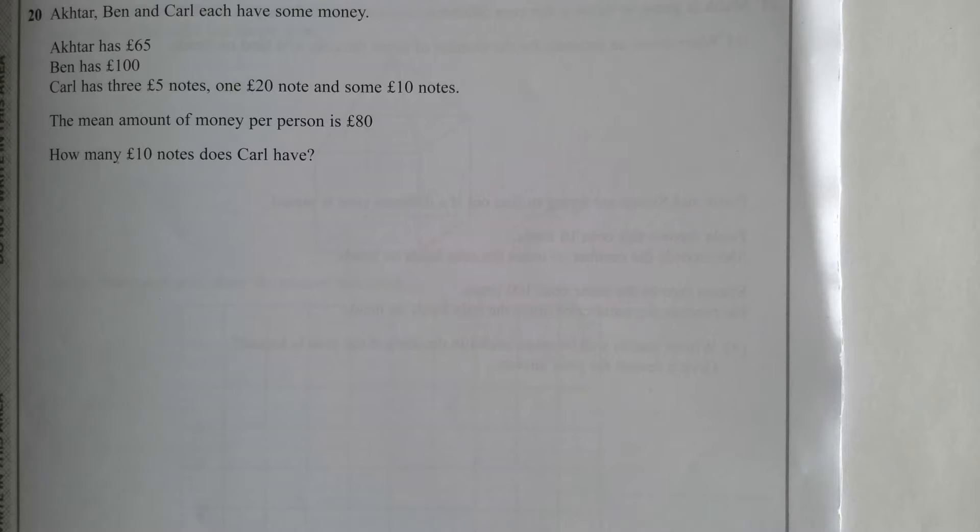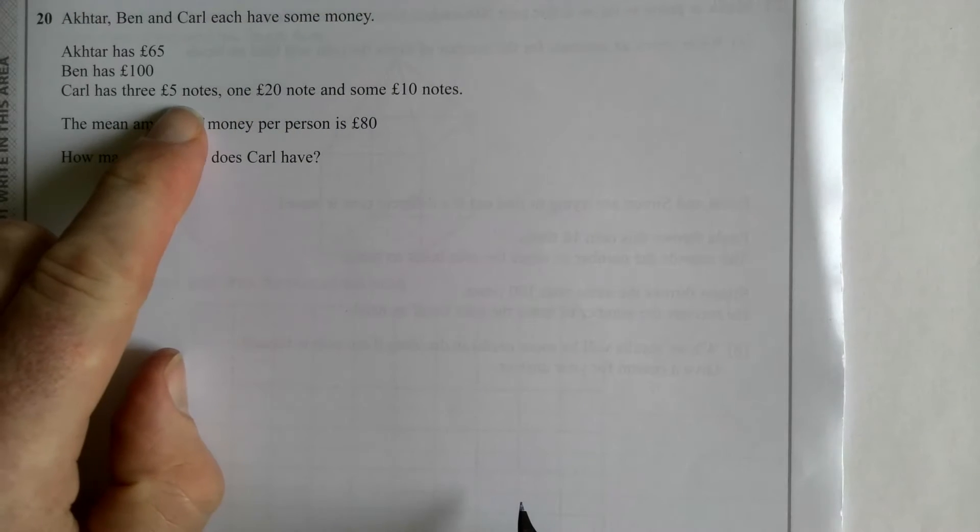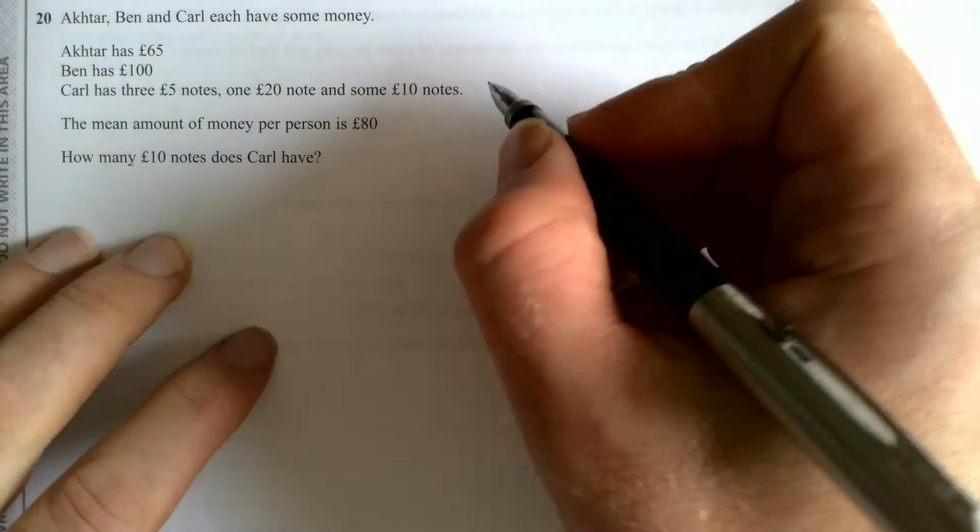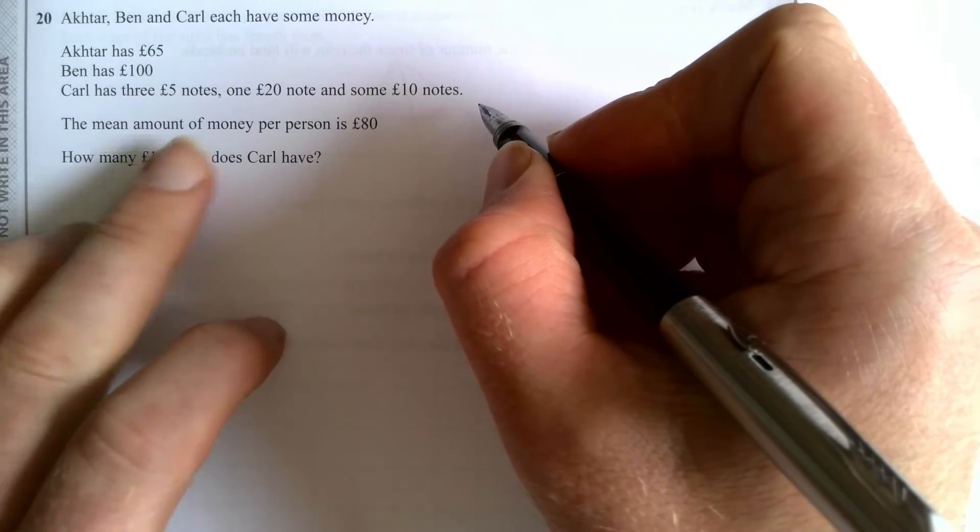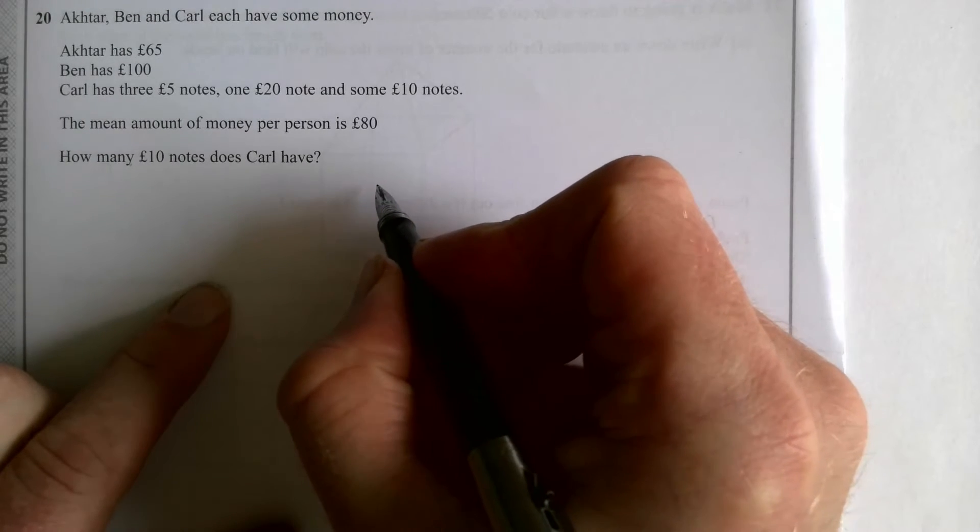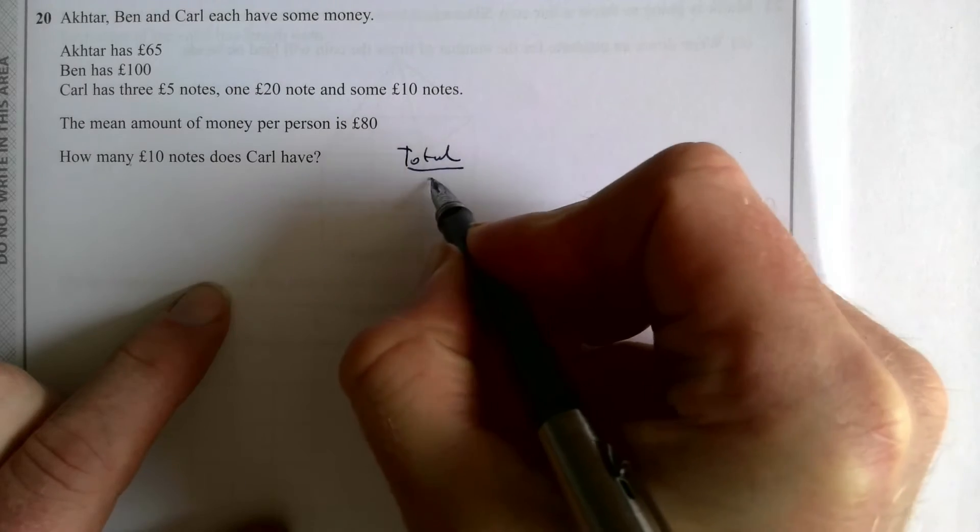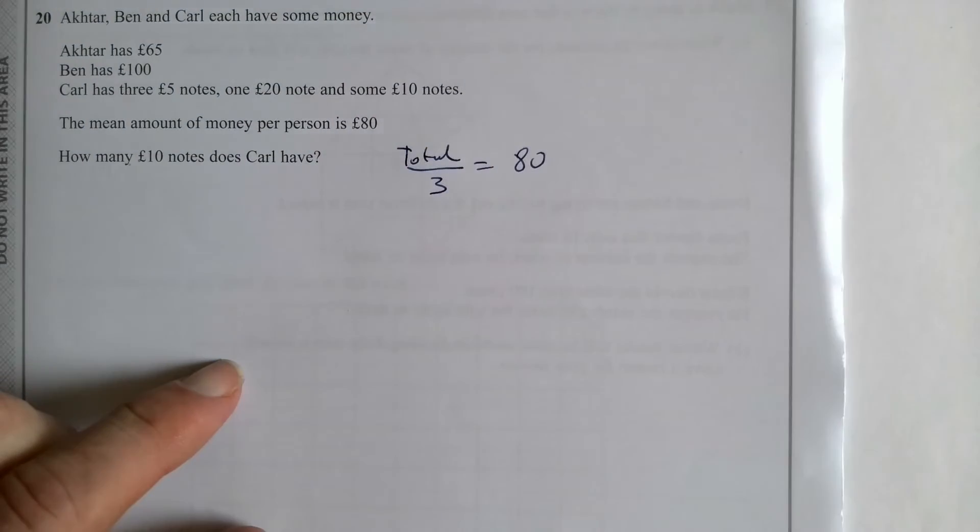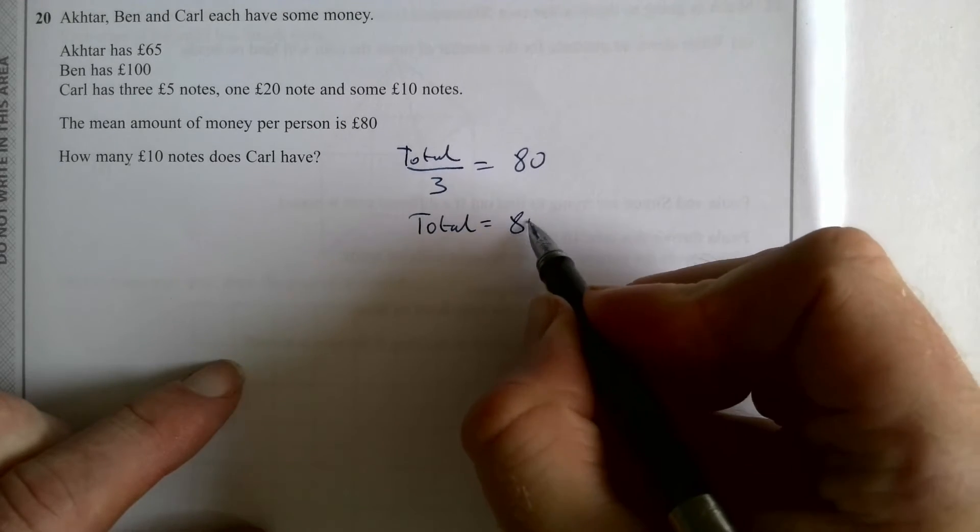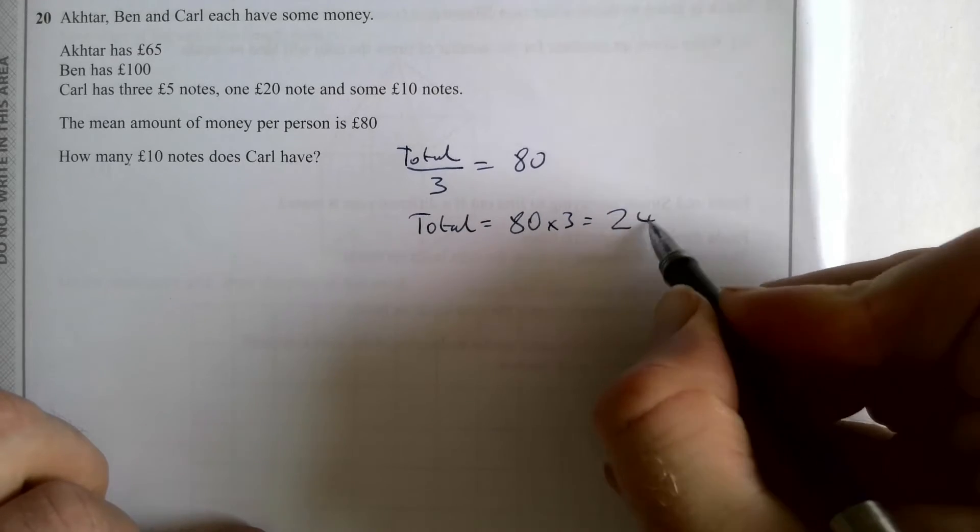Here's another 4 marker. Pause the video. Take your time. See what you can do. Right, so Actar has 65, Ben has 100, Carl has three five-pound notes, one 20-pound note, and some 10-pound notes. This is all to do with how much money people have got. So I'm going to... The mean amount of money per person is 80. Well, there's three people. And the mean is worked out by adding up the total divided by how many you've got, which is three. And that's giving us 80. So the total money that they've all got must be 80 times three, which is 240 pounds.